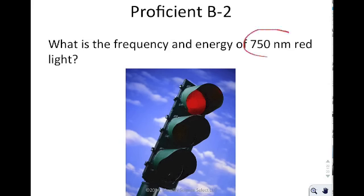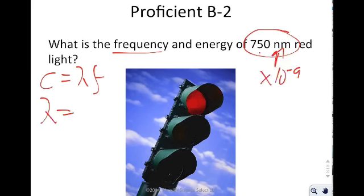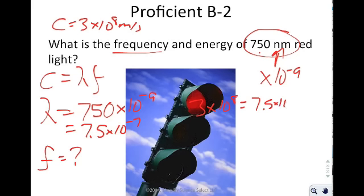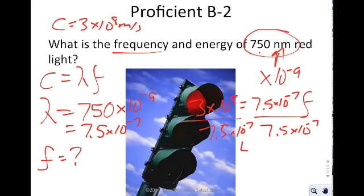Example two: what is the frequency and energy of red light? Red light has a wavelength of 750 nm = 7.5 × 10⁻⁷ m. Using C = λF, we write 3 × 10⁸ = 7.5 × 10⁻⁷ × F. Solving for F by dividing both sides by 7.5 × 10⁻⁷ gives a frequency of 4 × 10¹⁴ Hz.